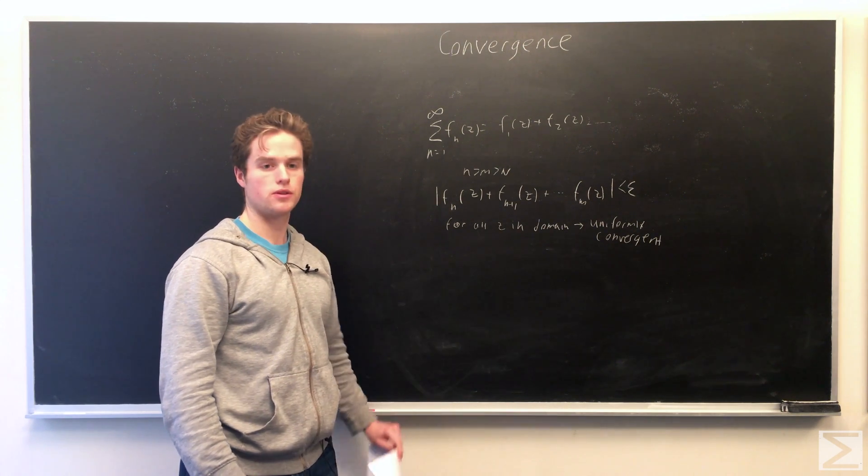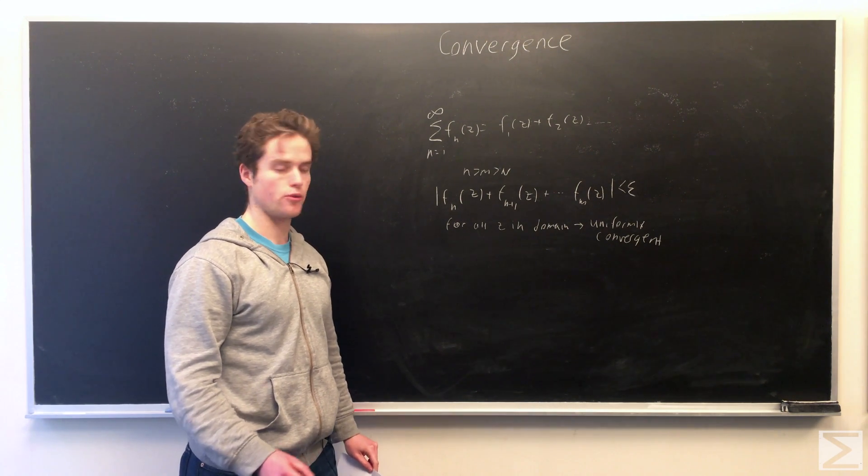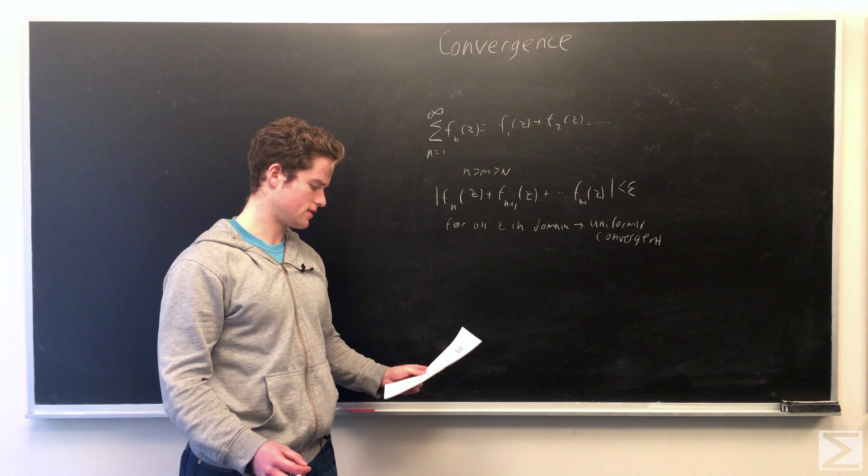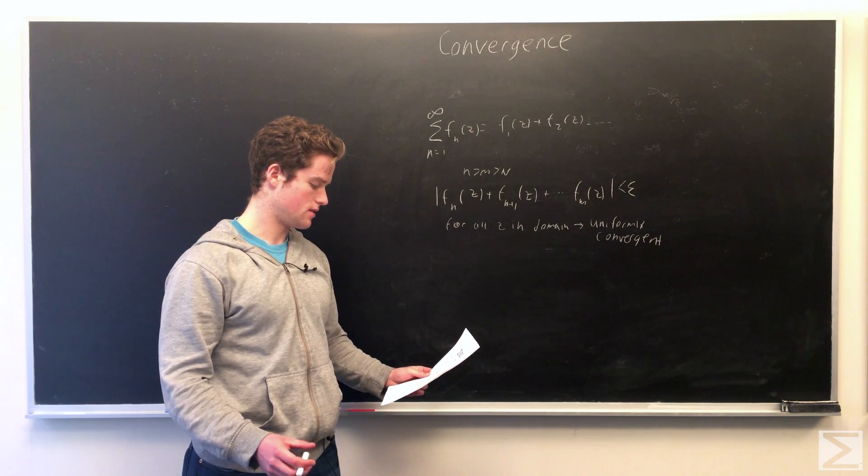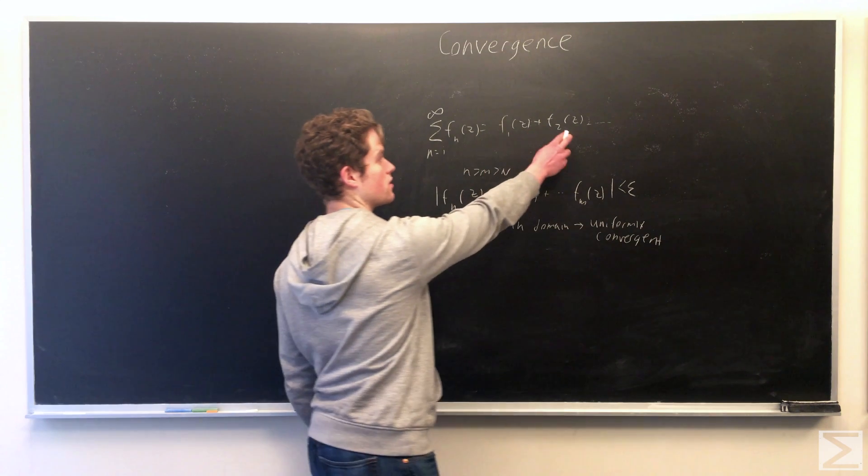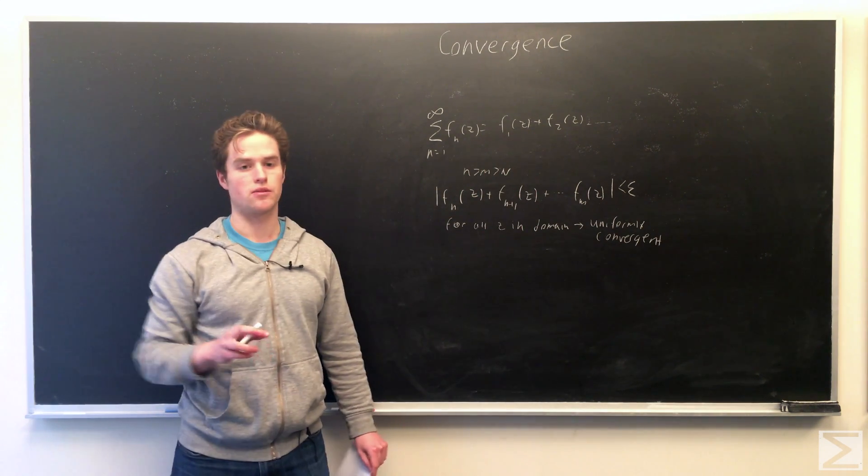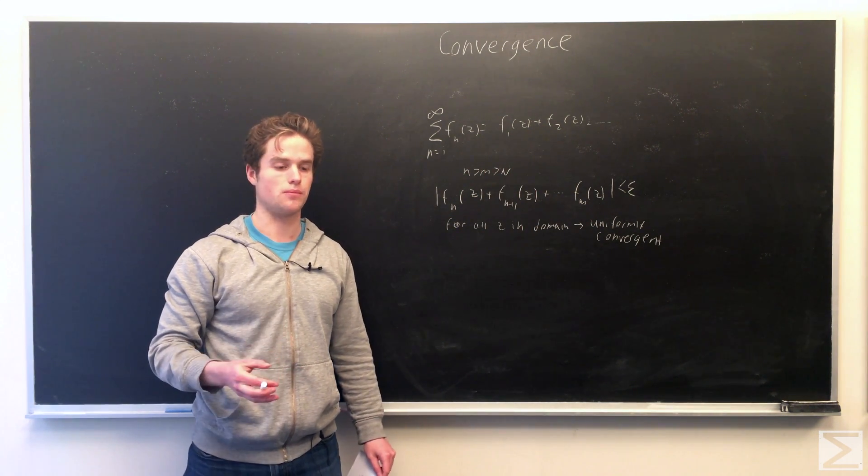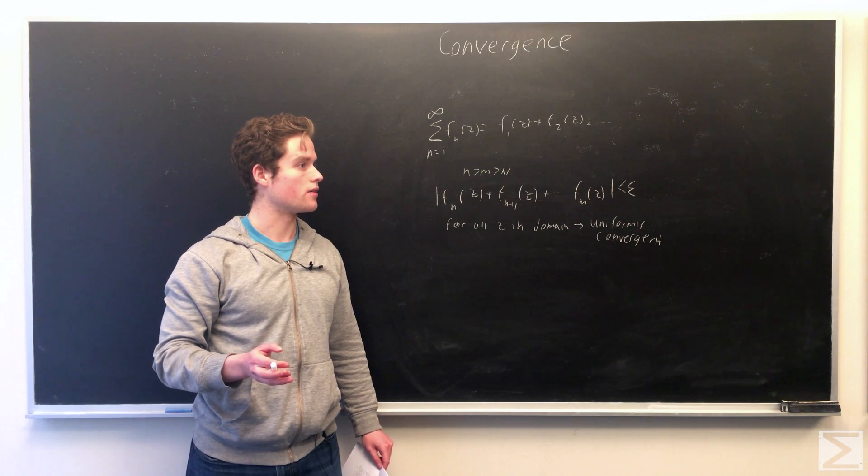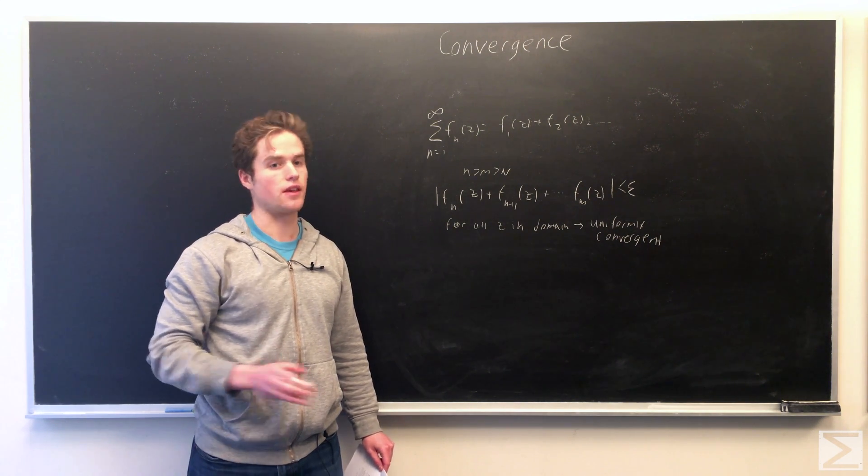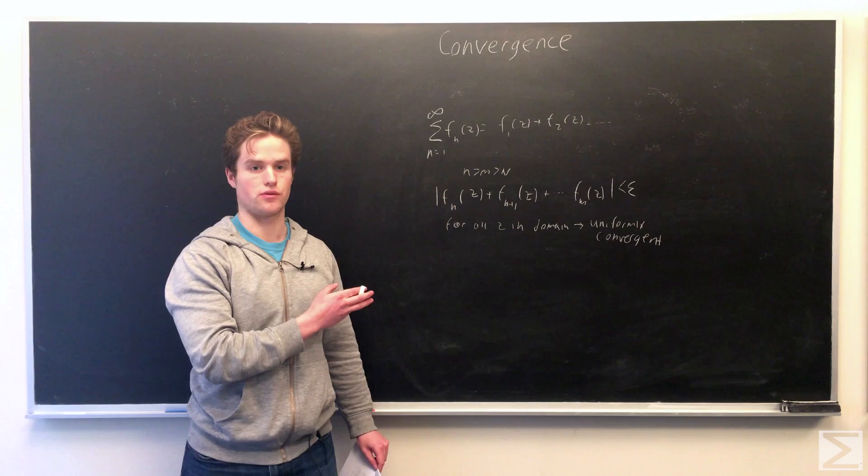And so one test for uniform convergence is the Weierstrass M test. That says that if each one of these on the domain, the moduli is less than the value of some convergent real series, then this series will also be uniformly convergent.